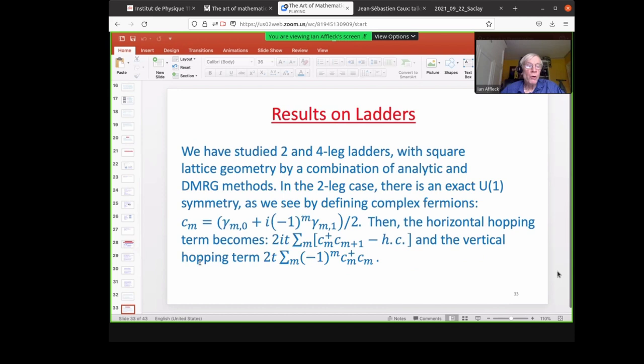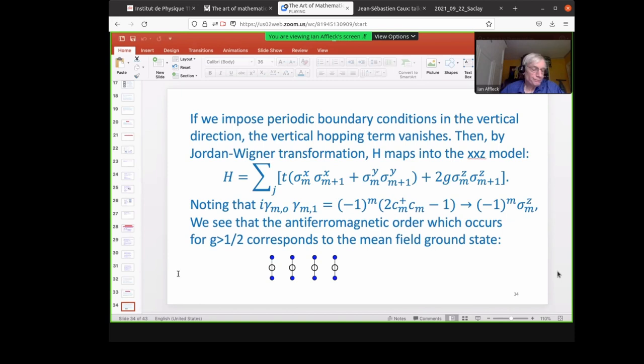Okay, so we studied this model on ladders. So the two-dimensional ladder, we can actually solve exactly. We have a U1 symmetry. We can define cm to be gamma m0 plus i minus 1 to the m gamma m1. Horizontal hopping term becomes 2i t cm dagger cm plus 1 minus Hermitian conjugate. The vertical hopping term is just minus 1 to the m cm dagger cm. So if we impose periodic boundary conditions, this maps into the Jordan-Wigner term. And we can go from Majoranas to complex fermions. And we find that in fact, the broken symmetry phases that occur for strong enough g in the spin model actually correspond exactly to the predicted phases, broken symmetry phases that we predict by mean field theory. So this actually confirms the mean field theory predictions.